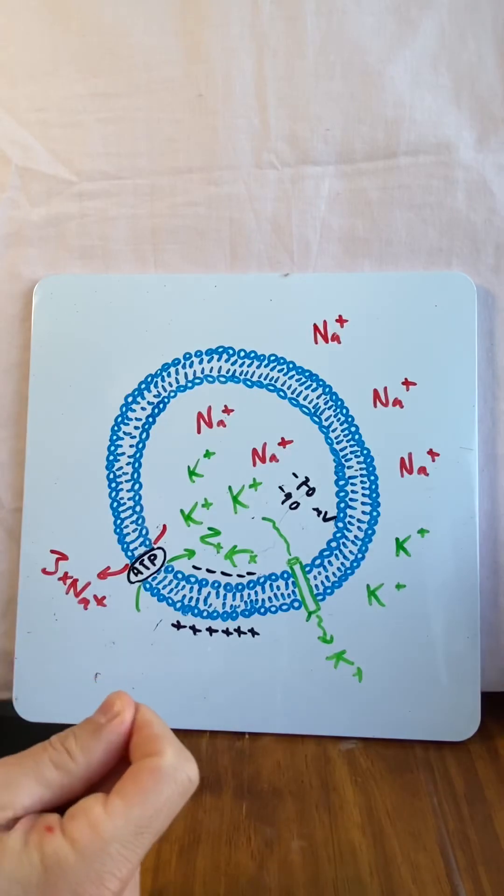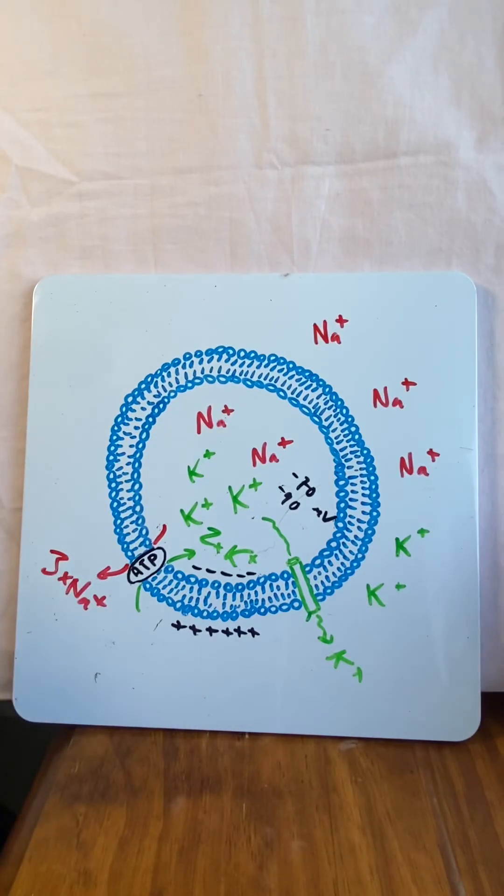Now there's a potential for change. We can change the charge or we can change the concentration, and this is the resting membrane potential.